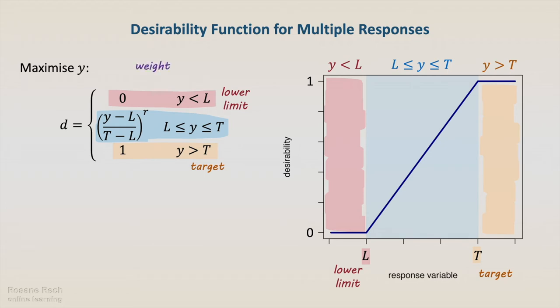The r parameter is called weight or scale. If r is 1, the relationship is linear. However, we can also define r between 0 and 1, or r higher than 1. The latter places more emphasis on being close to the target.